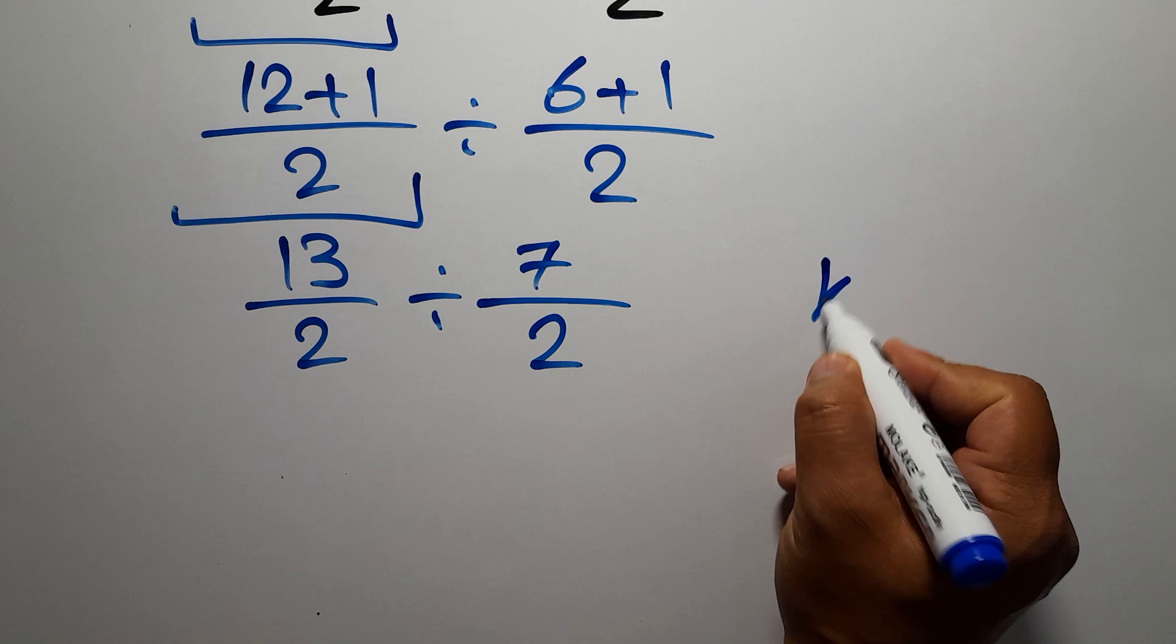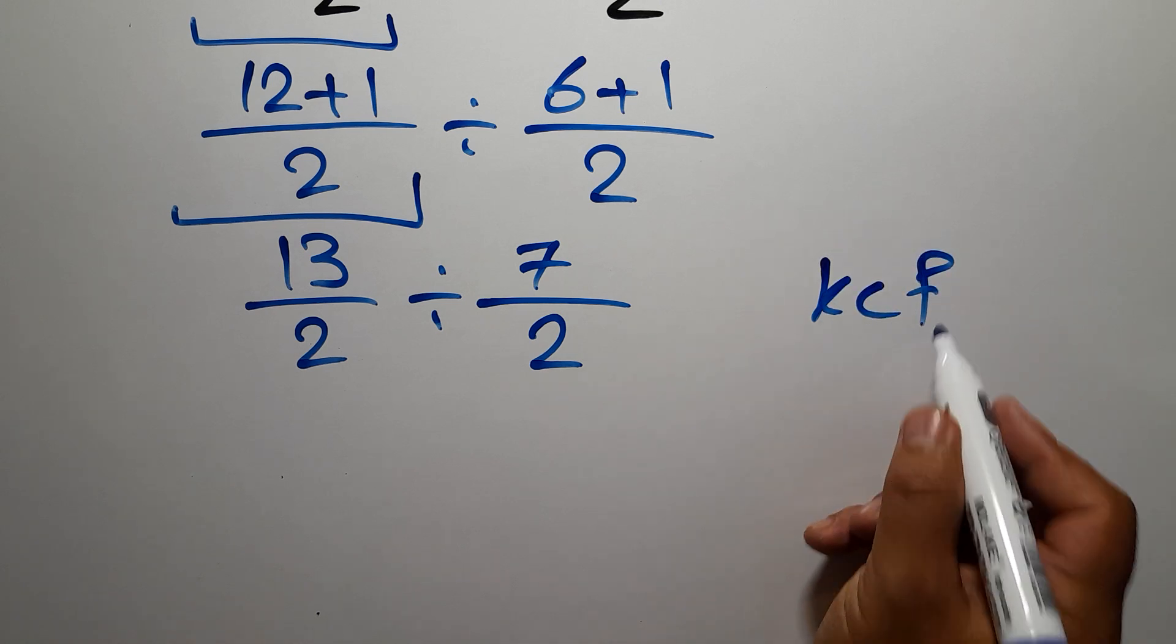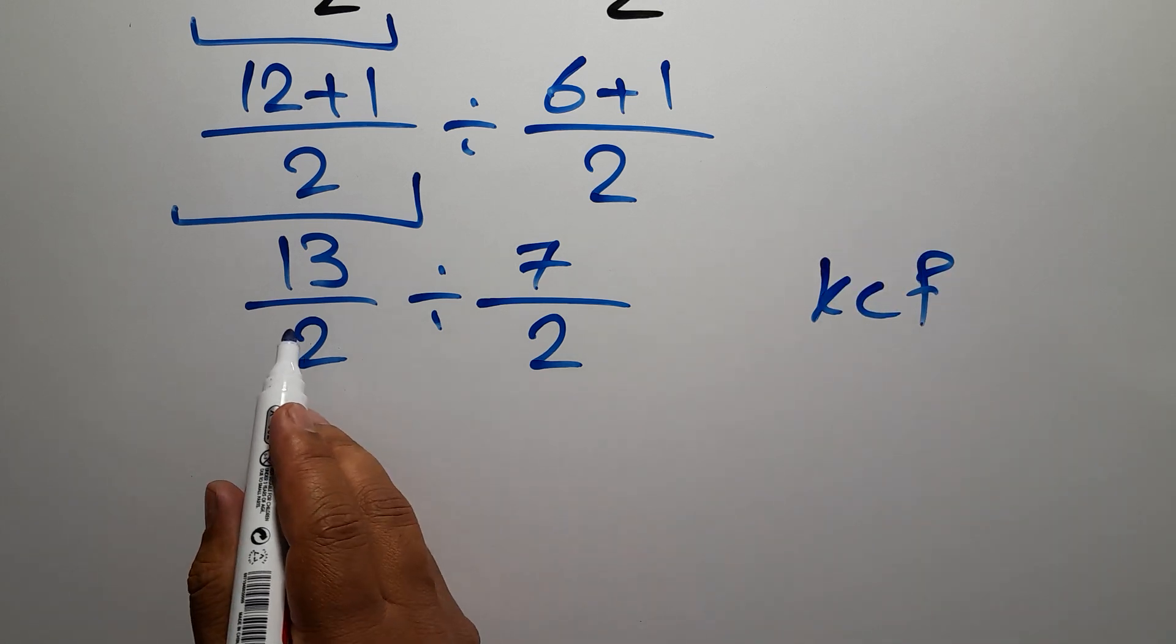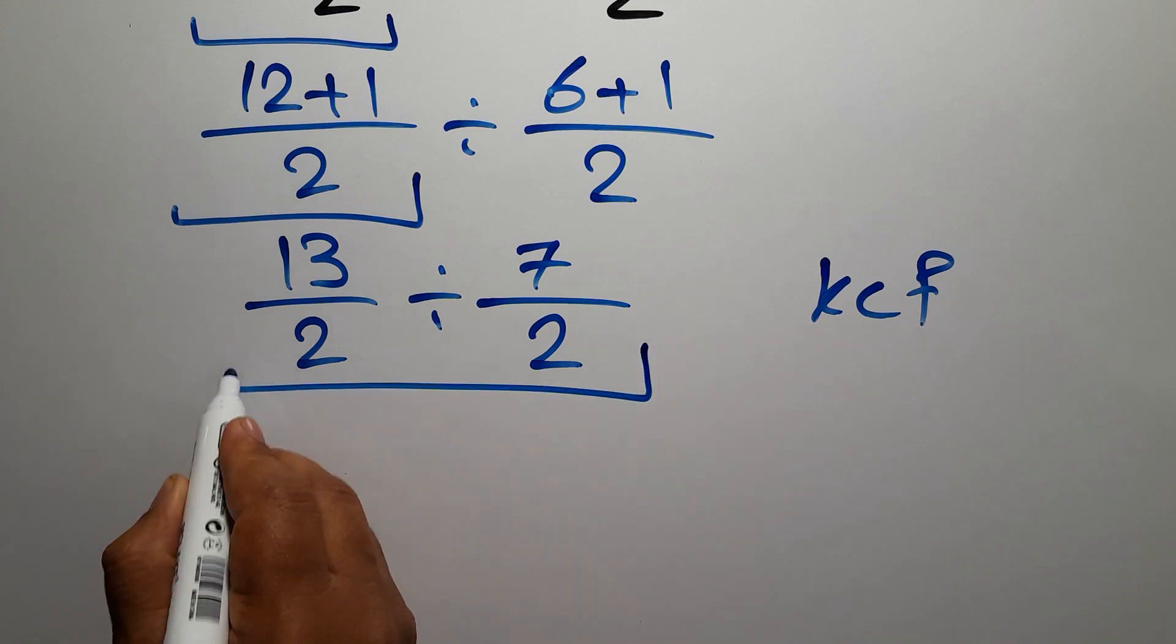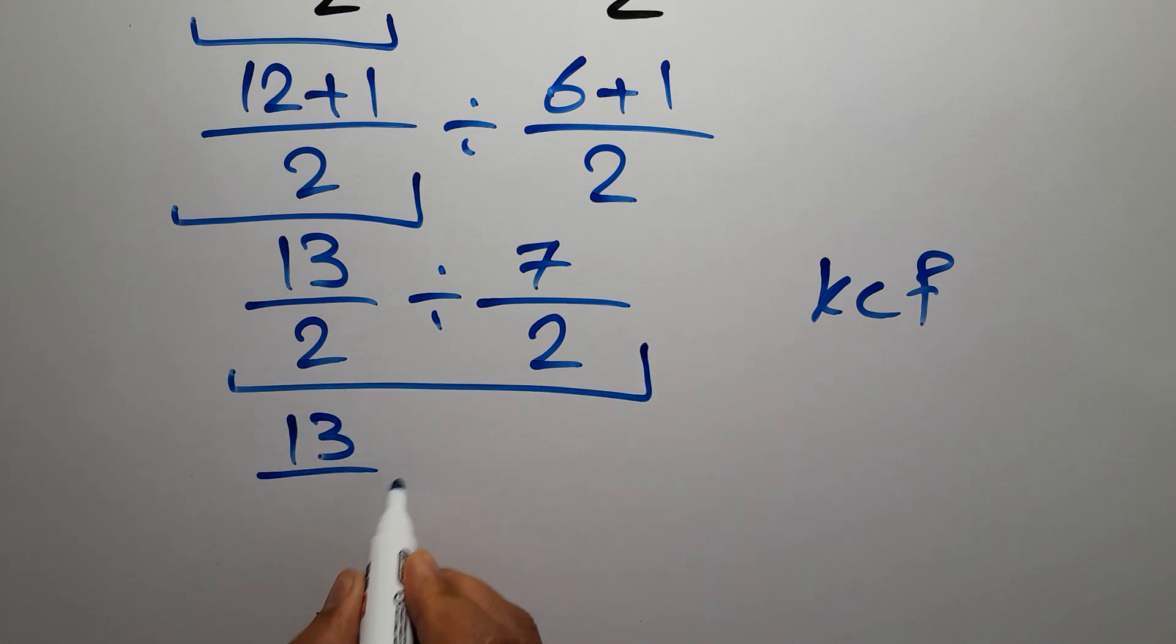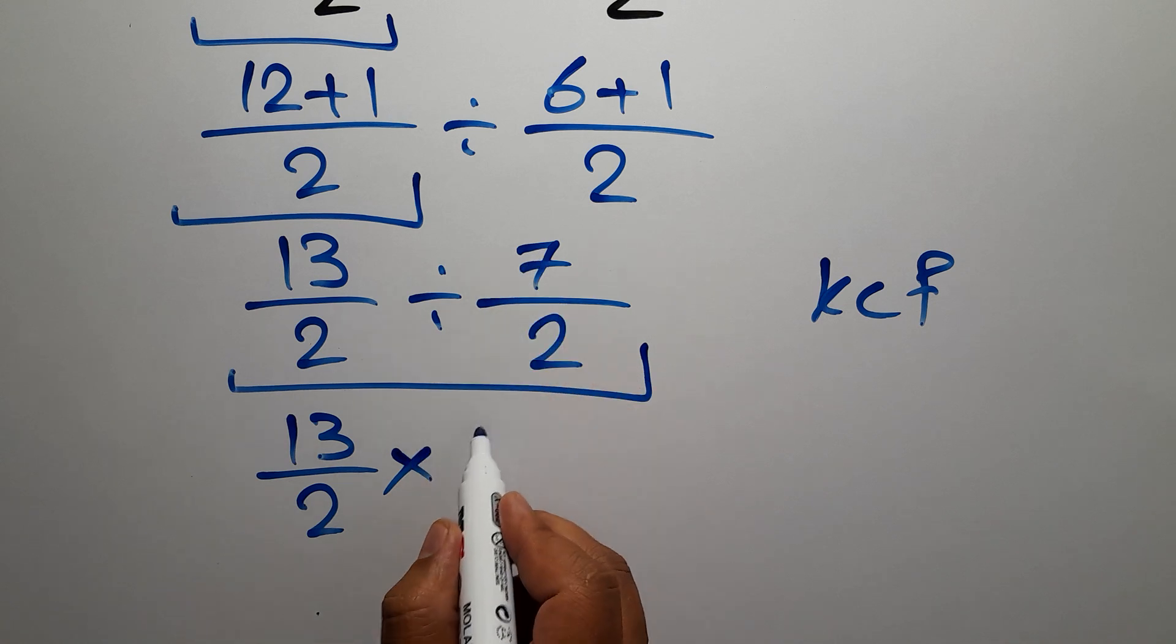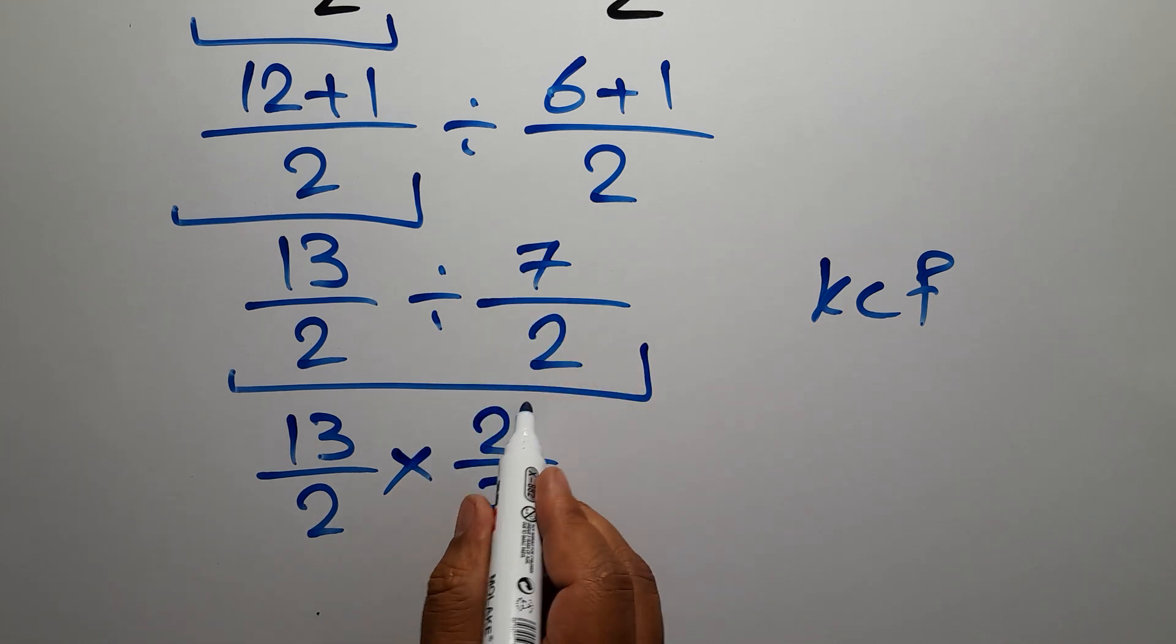Okay, according to the KCF rule, K stands for keep, C stands for change, and F stands for flip. We can write: keep the first fraction 13 over 2, change the division to multiplication, and we flip the second fraction to 2 over 7.